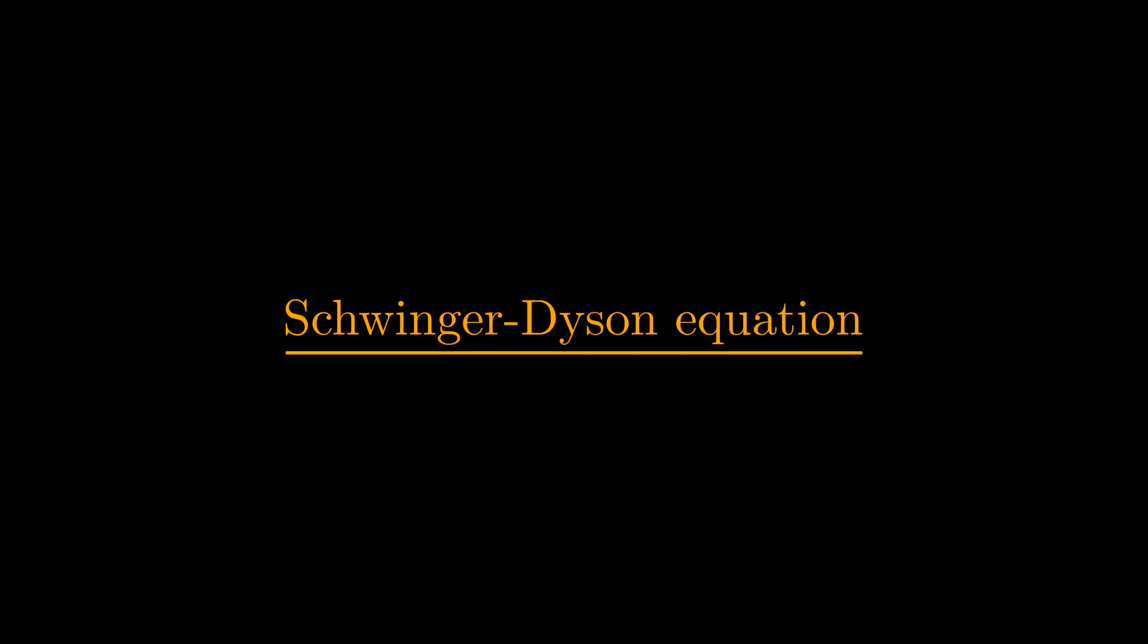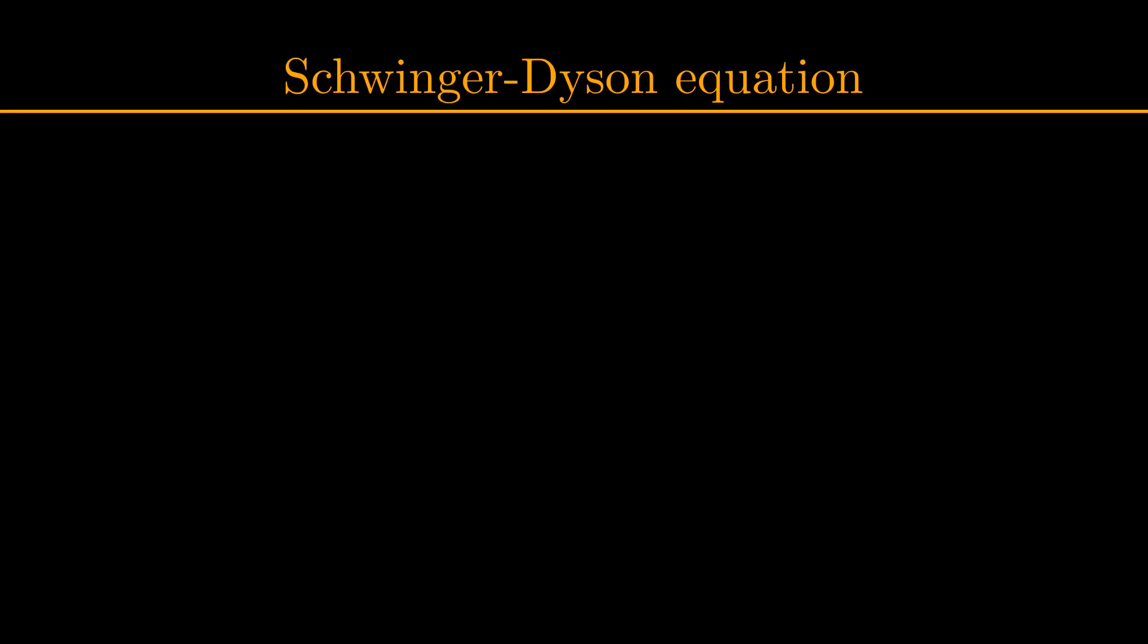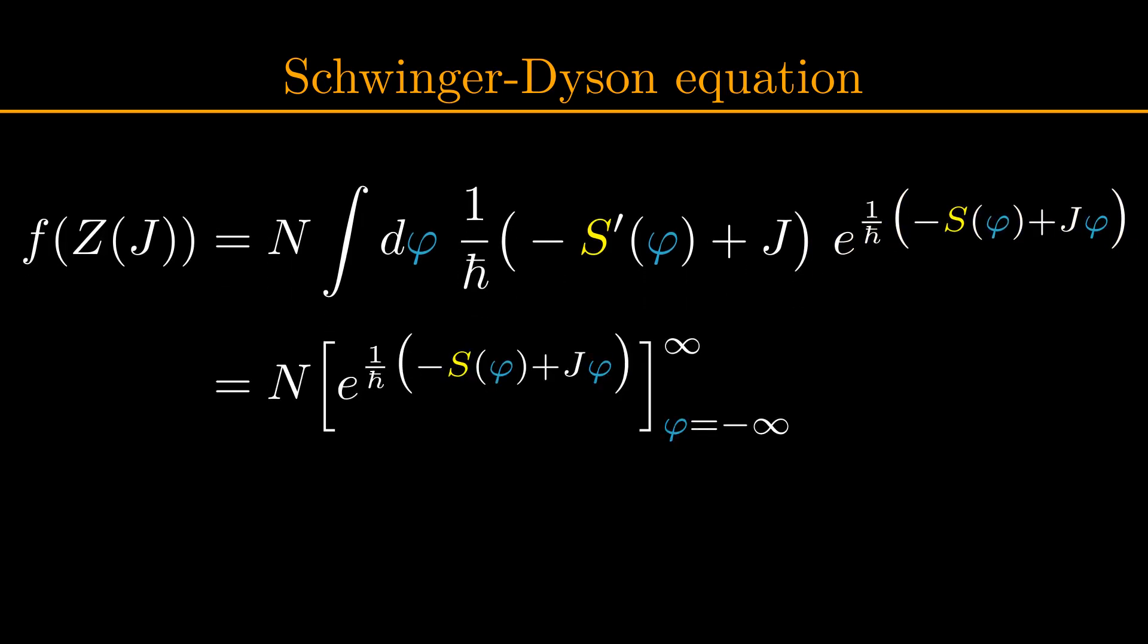From the path integral, I will now derive the Schwinger-Dyson equation, which is a very useful equation in quantum field theory relating Green's functions in the theory. Take a look at the path integral again. Notice what happens if I multiply the integrand by minus the derivative of S with respect to phi, here denoted as S prime of phi, plus j multiplied by the inverse of h bar. This term is exactly the derivative of the exponential term with respect to phi. We can perform this integration, and since the integrand vanishes at plus and minus infinity, we get that the integral is zero.